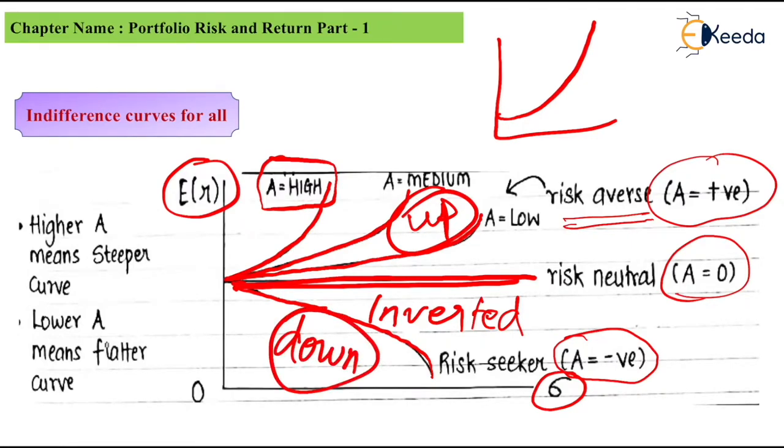For exam, just remember a few terms. Higher A means steeper curve, and lower A means flatter curve. Can I say, if I add two more lines: if A is zero, then the curve is exactly flat, it's not a curve only. And if A is negative, then my curve is known as inverted curve. These four conclusions you need to remember.